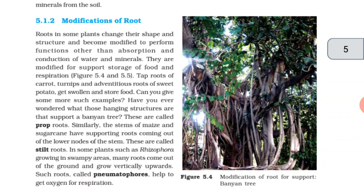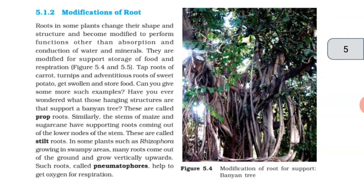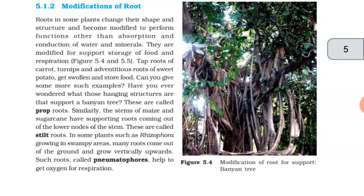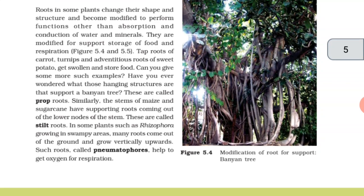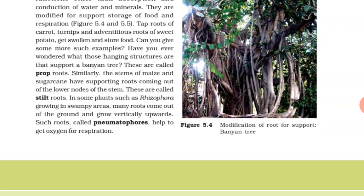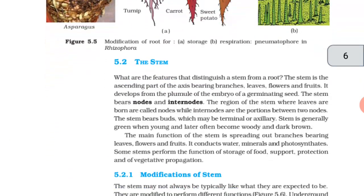In some plants, such as Rhizophora, growing in swampy areas, many roots come out of the ground and grow vertically upward. Such roots, called pneumatophores, help to get oxygen for respiration.